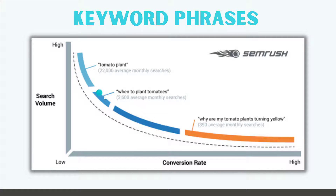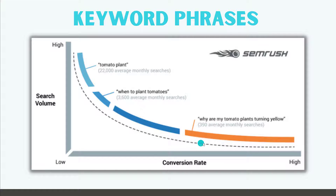As we go down to the next rung, it gets a little more descriptive, like 'when to plant tomatoes' — there are 3,600 monthly searches, so there's less search volume but also less competition and less cost to rank for this keyword. Where we want to spend the majority of our time is down at the long-tail keywords, where there are fewer average monthly searches, a lot less competition, and it's a lot cheaper to bid on these keywords with paid advertising. These people at the bottom are more likely to convert because they're asking a very specific question, and if you can answer that specific long-tail question, they're more likely to convert.